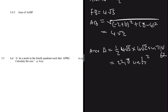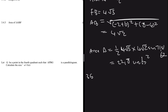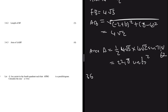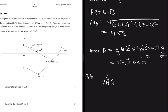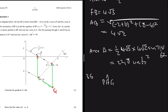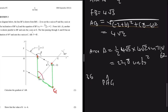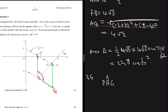Question 3.5 says: let G be a point in the fourth quadrant such that APBG is a parallelogram. Calculate the size of angle PAG. We need to locate G so that APBG forms a parallelogram, with G somewhere in the fourth quadrant.